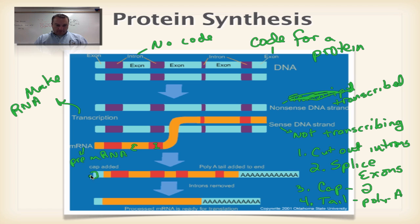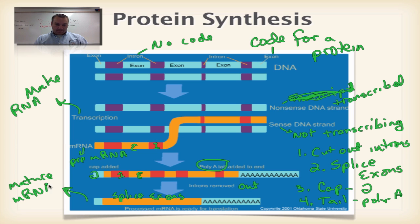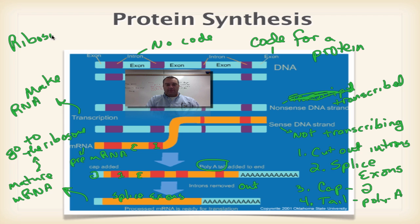So we've added the cap. Remember it's a backwards guanine base. We have our poly A tail attached. Now we've got to get rid of these introns and we've got to put these exons together. So the introns are now out. We spliced the exons. We have a cap, we have our poly A tail. I like to call this mature mRNA because now it's ready to leave the nest. It can go out and handle itself. Mature RNA will leave the nucleus and it can now go to the ribosome. And at a ribosome, you're going to make proteins. The ribosome will make proteins. It's a little protein factory.